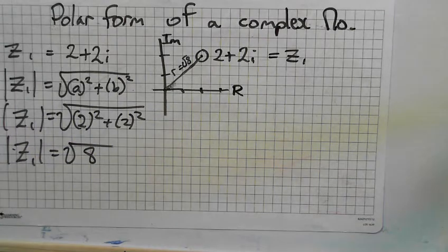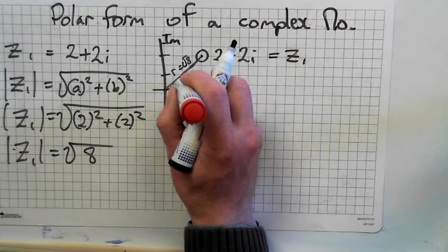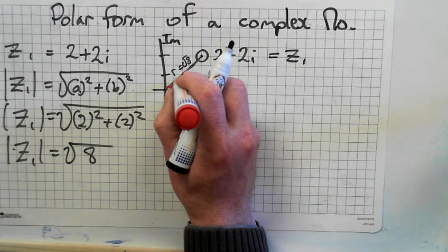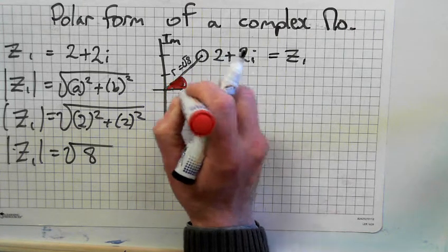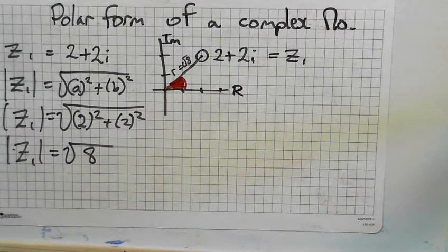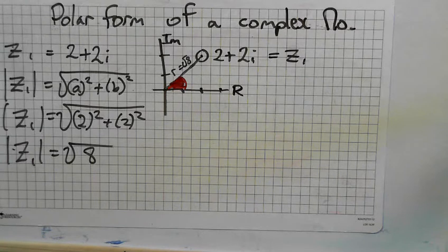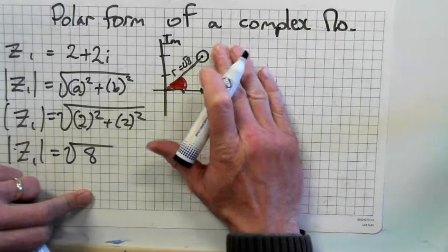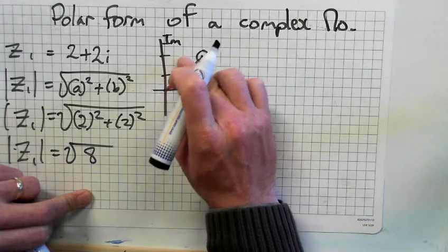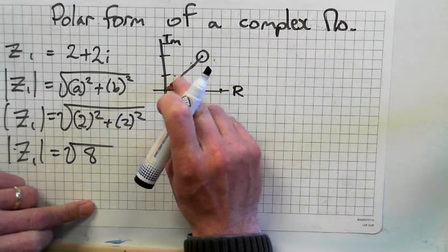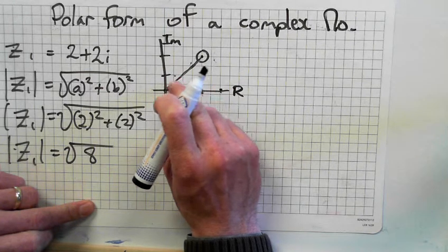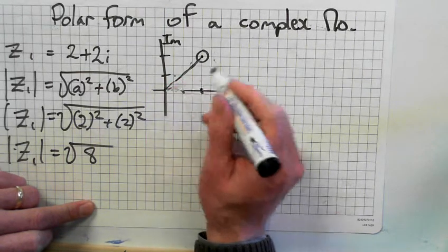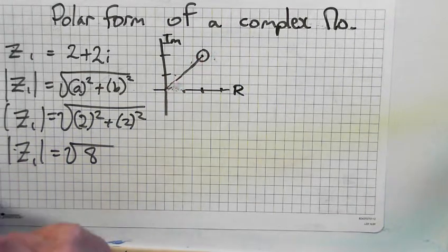The other thing is we need this angle. We get the angle using the tan formula. You know that point is 2 plus 2i. To get this angle, we complete this triangle.